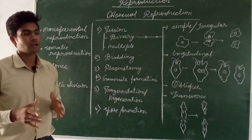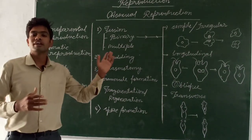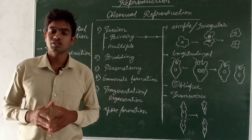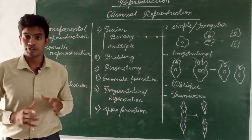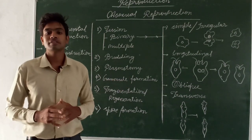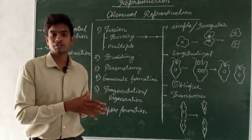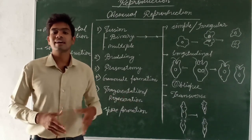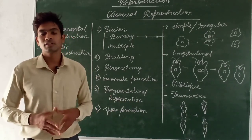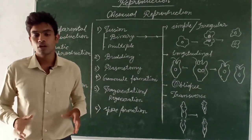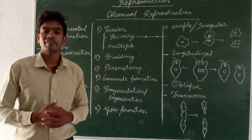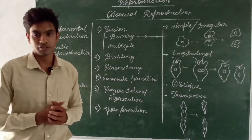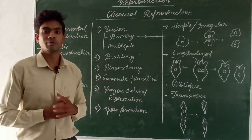The disadvantage of asexual reproduction is one, and it is prominent: since no fusion of gametes takes place, there is no chance of genetic recombination. With no genetic recombination, there is no genetic variation. In the absence of genetic variation, all offsprings will be clones of each other — this is the biggest disadvantage of asexual reproduction.